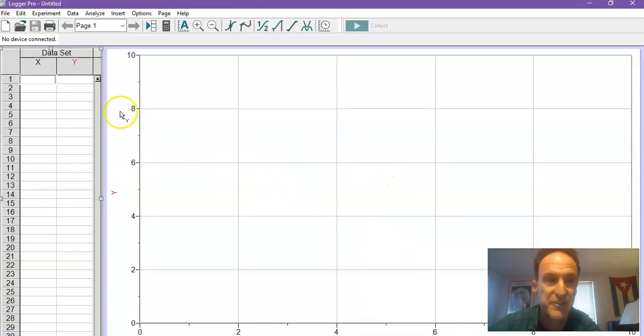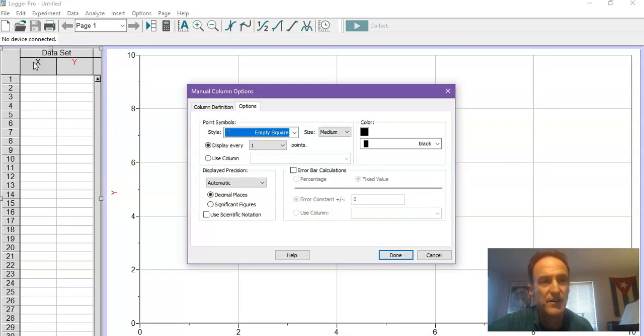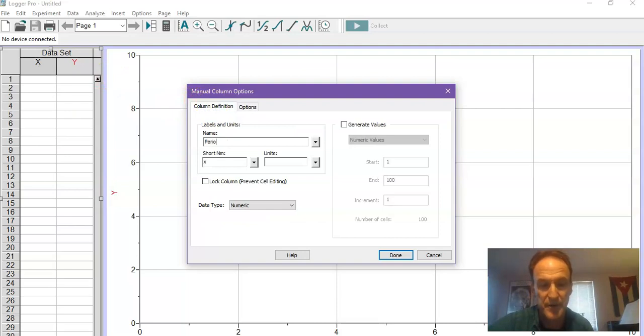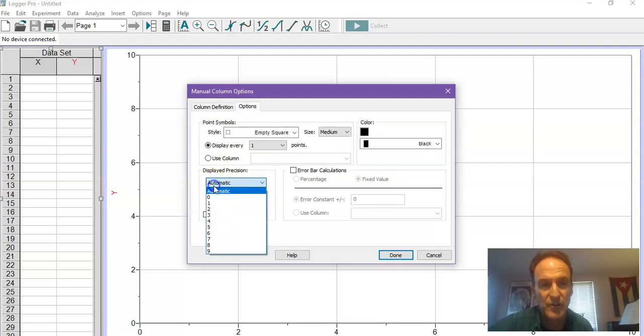On the x-axis, we've got the period squared. So I'm going to put in position, period squared. And that's going to be t squared. Units are going to be second squared. And the options, be sure that you change to three significant figures. Done.